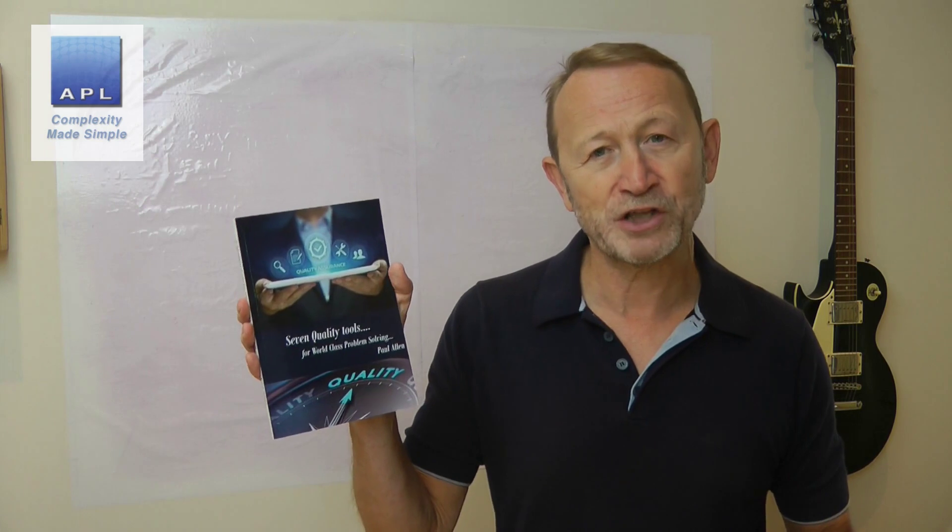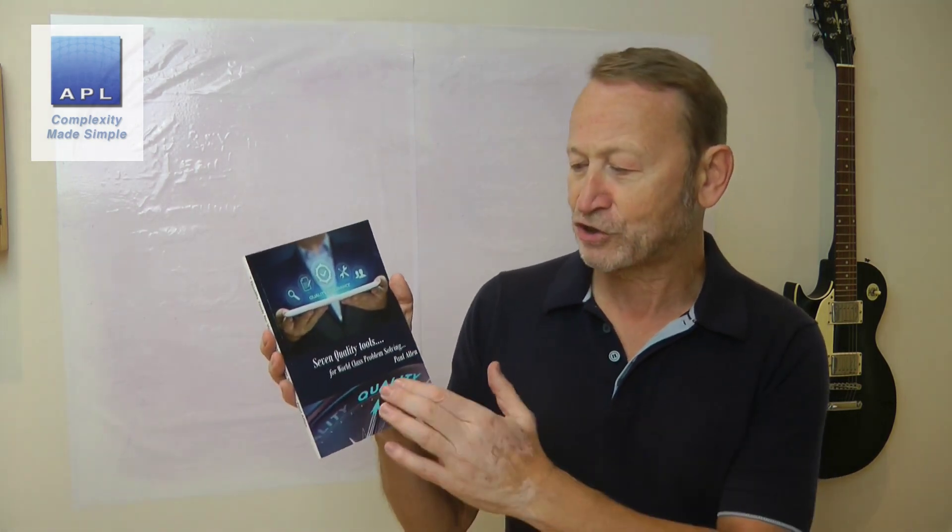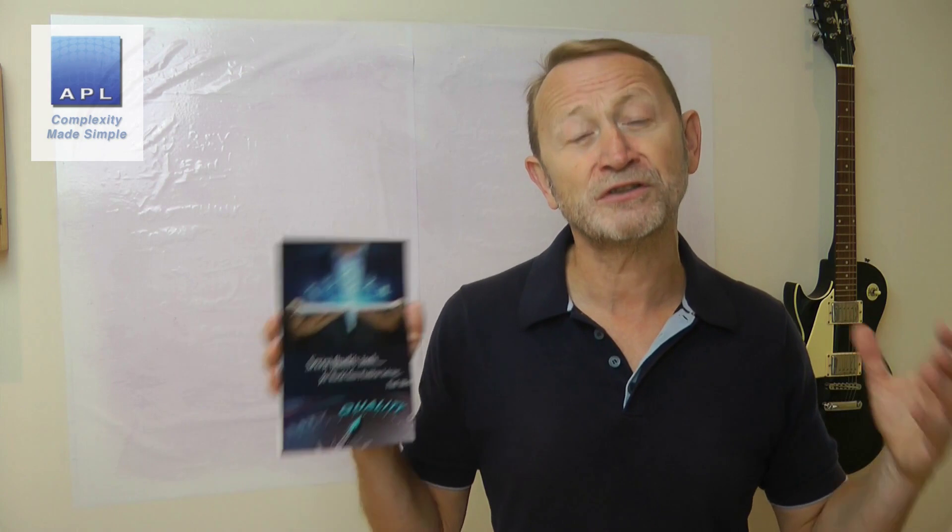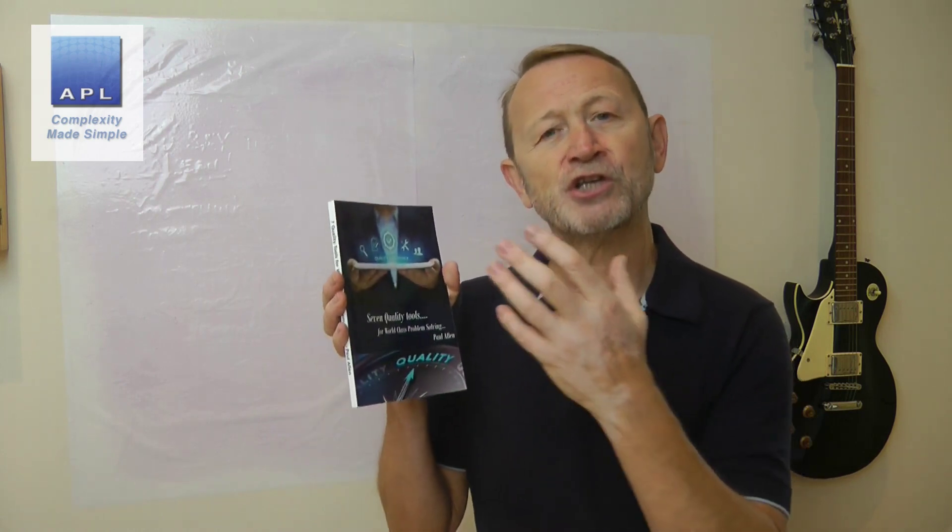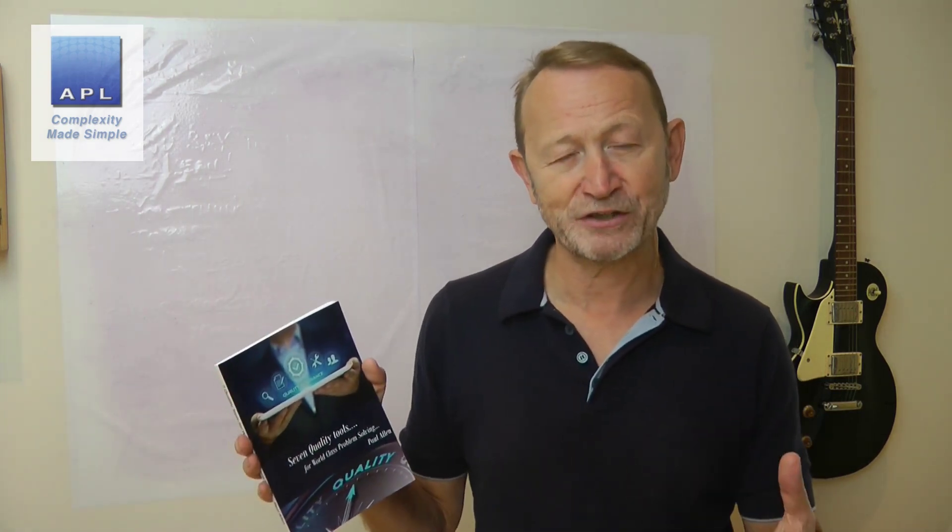Now before we get into today's video, great news, a new book has been released today, The 7 Quality Tools for World Class Problem Solving. If you want to support the channel, go and buy the book. It's brilliant for people who are trying to form quality teams, do 5S continuous improvement activities, sort of yellow belt level problem solving, fantastic new book. The link to lulu.com is in the description below. So with that out of the way, let's get on to today's video.